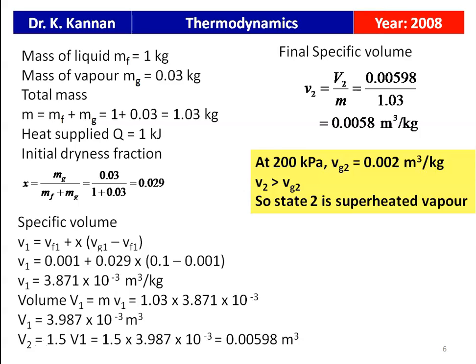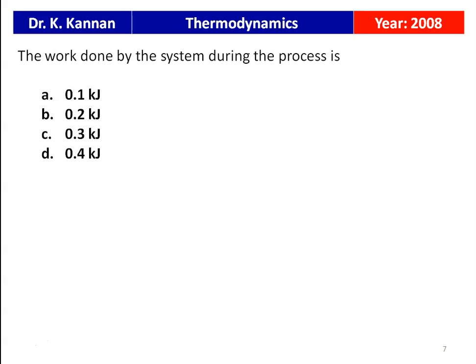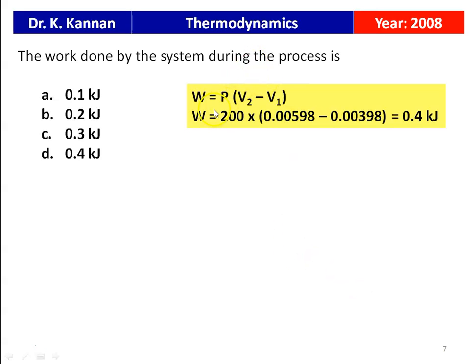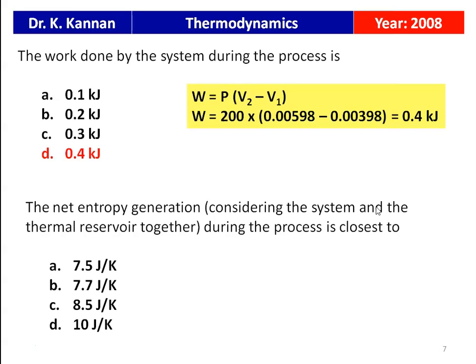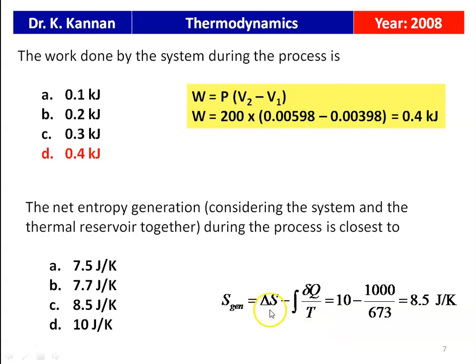The second question: work done by the system during this process, with options 0.1, 0.2, 0.3, or 0.4 kJ. Work done = pressure × (V2 − V1), and the answer is 0.4 kJ. The third question: net entropy generation considering the system and the thermal reservoir together is closest to — the entropy generation = 10 − 1000/673 = 8.5 J/K. The answer is 8.5 J/K.